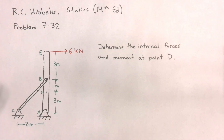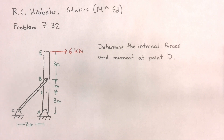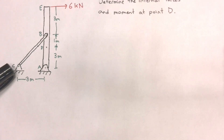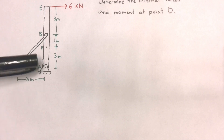The first step in an internal force problem is to draw a free body diagram. In this system, we have two members: AE and BC. We want to choose which of those two members to draw the free body diagram on. In this case, all the forces are acting on member AE, because whatever hinge reactions occur at C will also be experienced at point B and exerted on this bar. So the best thing to do is to draw your free body diagram for member AE.